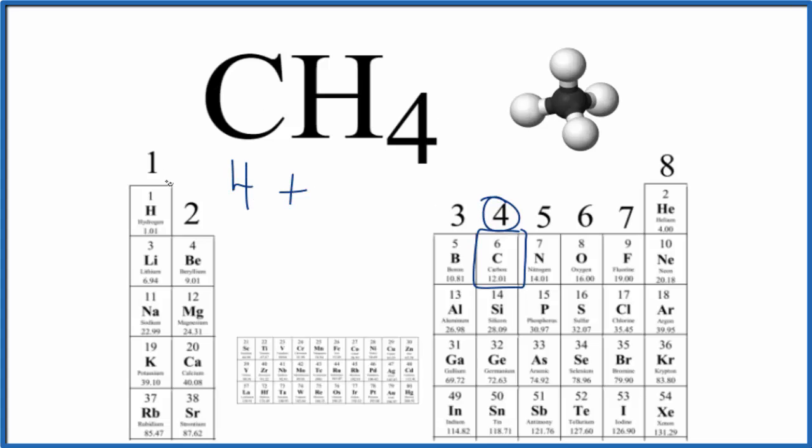The hydrogen right here is in group 1, so it has one valence electron. We do have four hydrogens though, so we multiply that by 4. 4 plus 4 gives us eight total valence electrons for CH4.